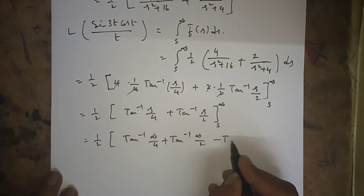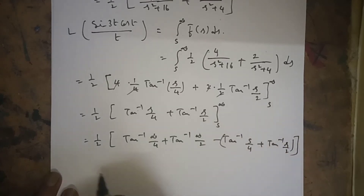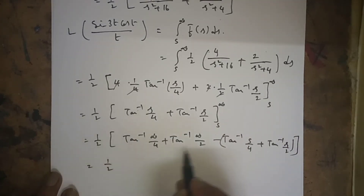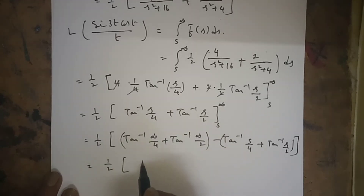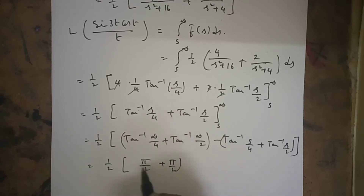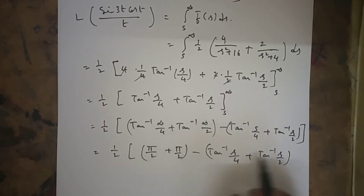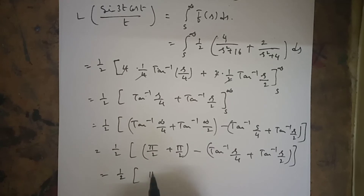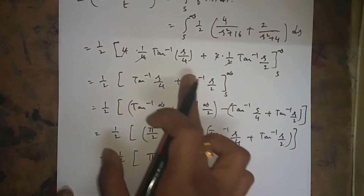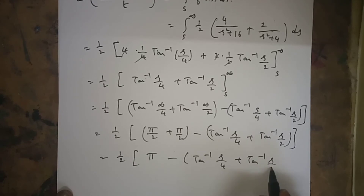Applying limits s to ∞: upper limit gives tan⁻¹(∞/4) + tan⁻¹(∞/2) = π/2 + π/2 = π. Lower limit is tan⁻¹(s/4) + tan⁻¹(s/2). The final answer is (1/2)[π - tan⁻¹(s/4) - tan⁻¹(s/2)].